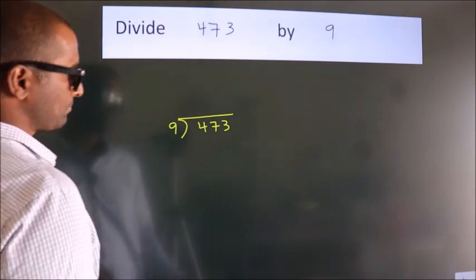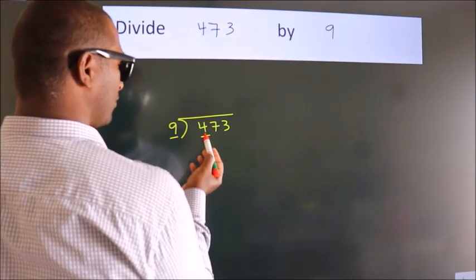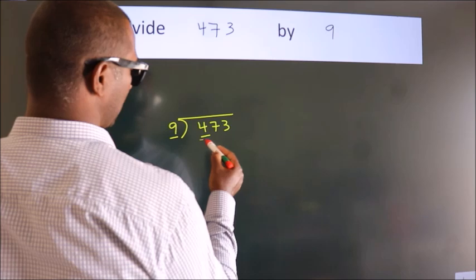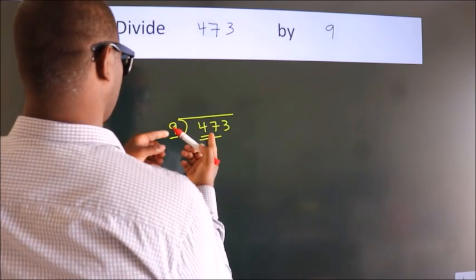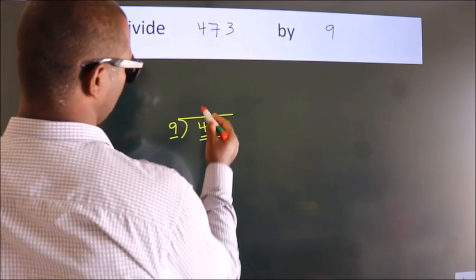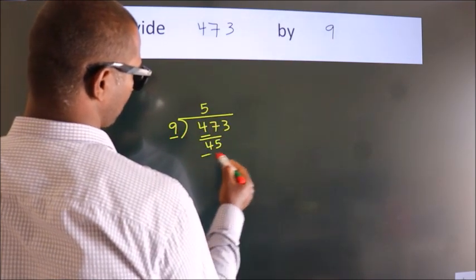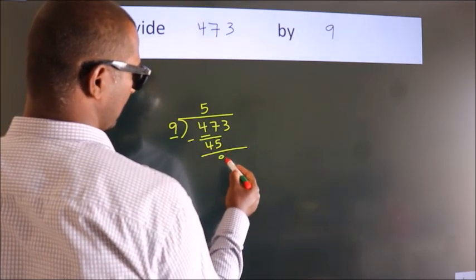Next, here we have 4, here 9. 4 is smaller than 9, so we should take two numbers: 47. A number close to 47 in the 9 table is 9 fives, 45. Now we should subtract, we get 2.